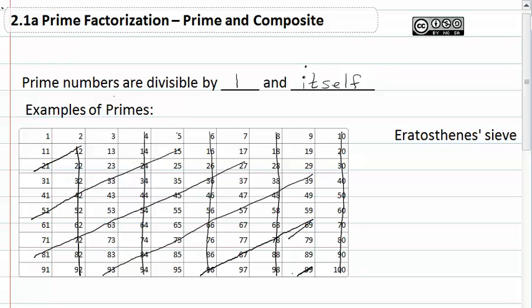Then we took our multiples of 5, that would be everything that ends in a 5, and everything that ends in 10 we already have crossed off.